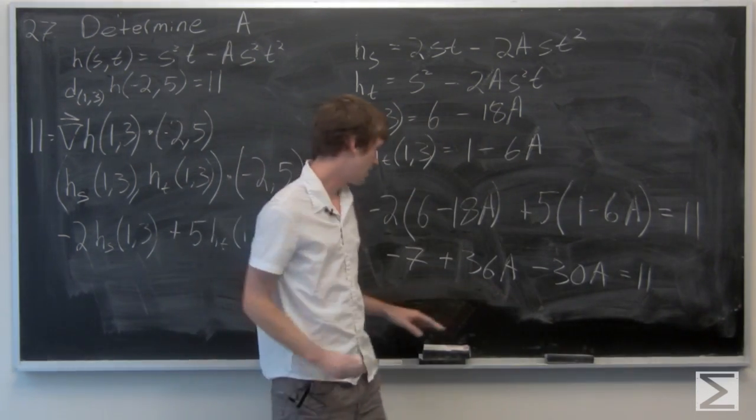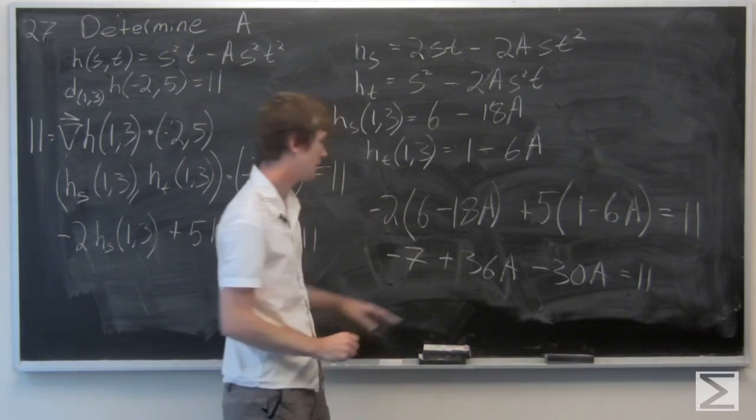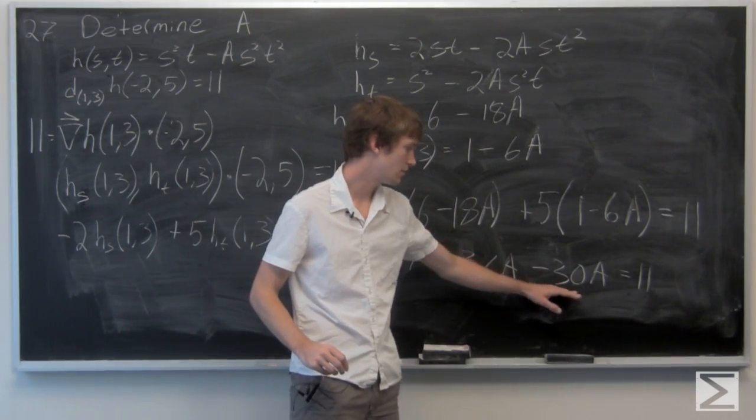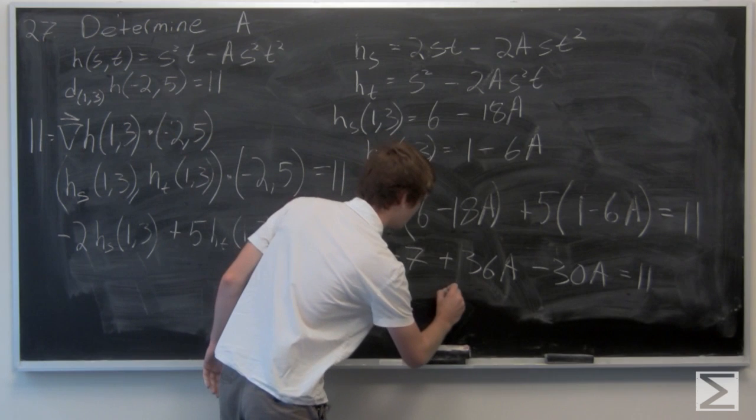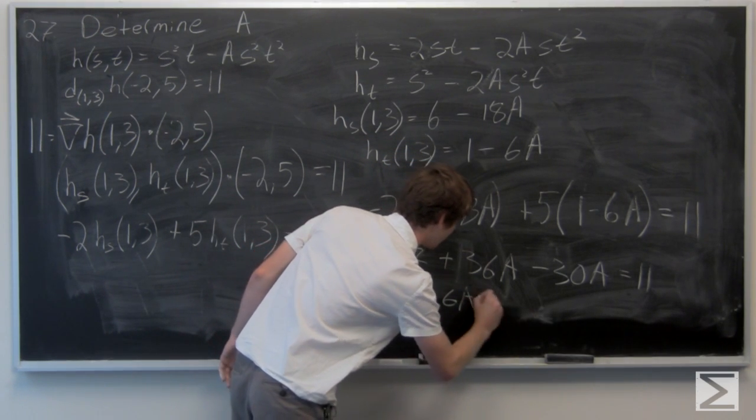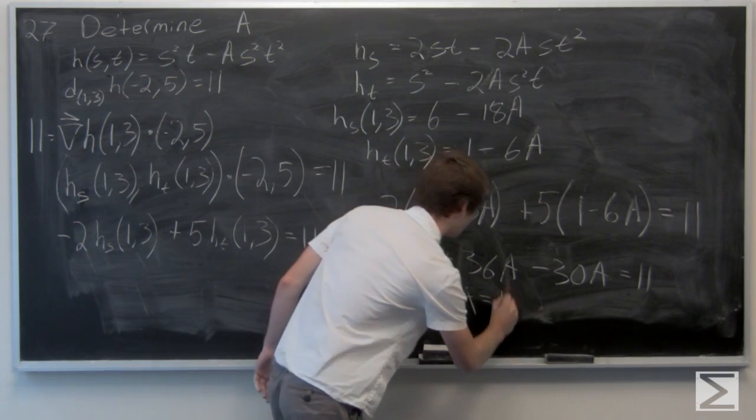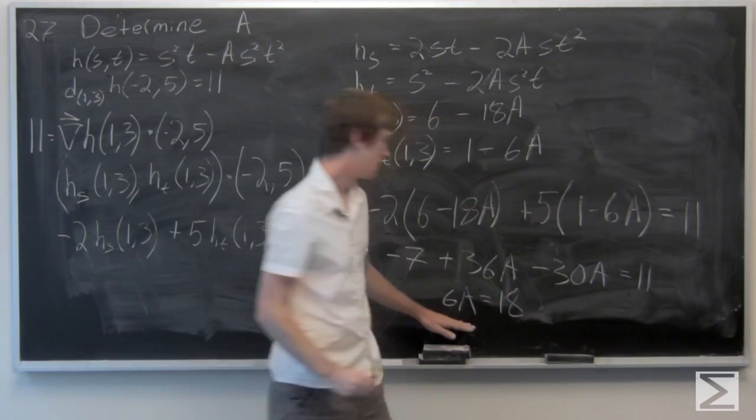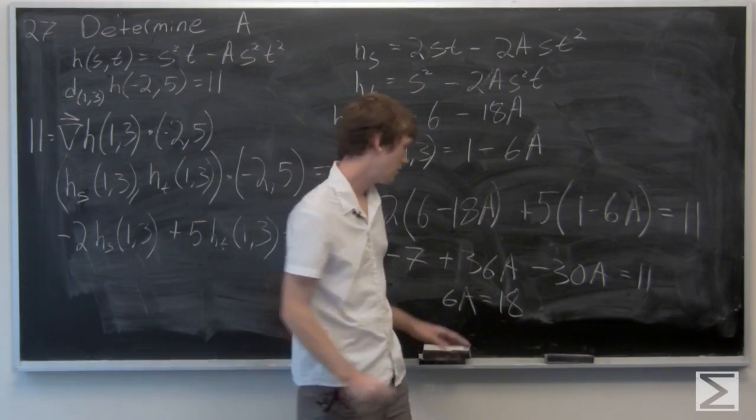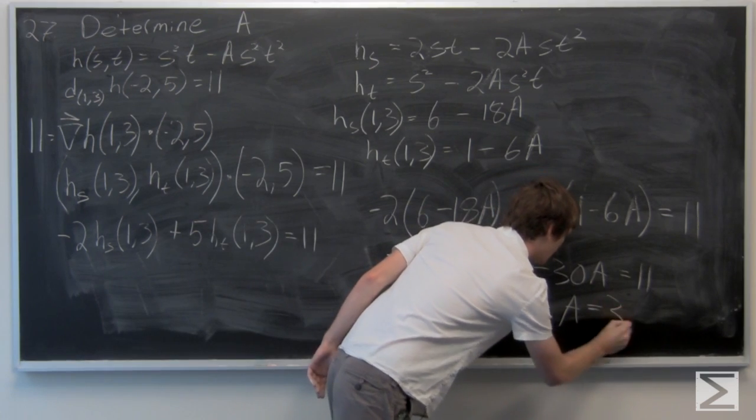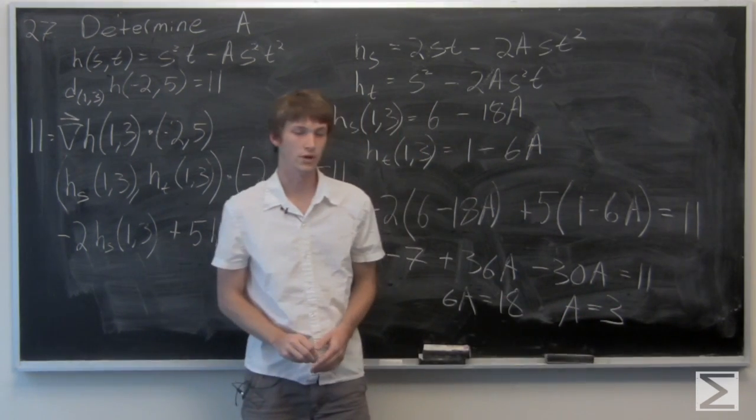So bringing the 7 over to this side and simplifying, we get that 6a equals 18 and a equals 3.